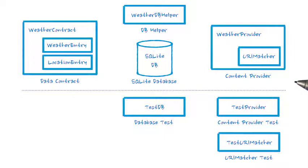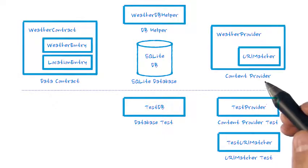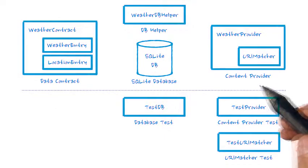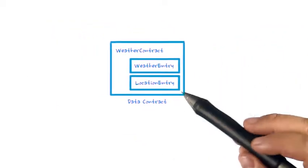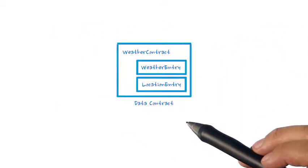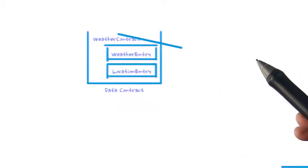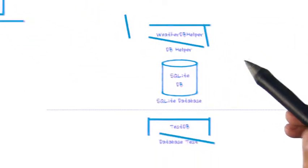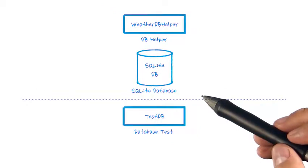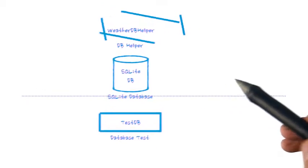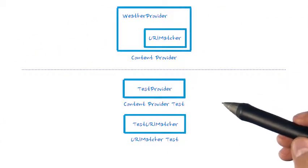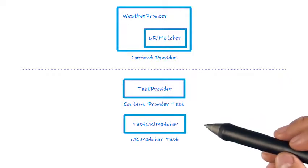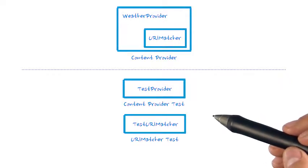Each one of these blocks represents a section of our modular data storage solution. We start by defining our data storage in terms of a contract. We then implement the database using SQLite. And finally, we layer a fundamental Android class between our UI and the data storage called a content provider.